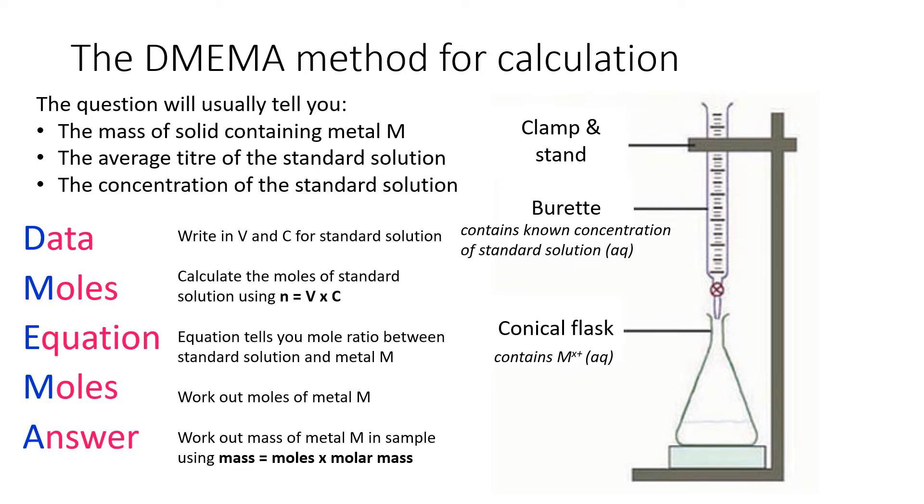So you write in the volume and concentration for the standard solution the question gives you. You calculate the moles using n equals V times C. The equation will tell you the mole ratio between the standard solution and the metal M. If you don't get given the equation, you'll be given how many moles react with each other. You then work out the moles of the metal you're after, and you work out the mass of the metal in the sample using mass equals moles times molar mass.